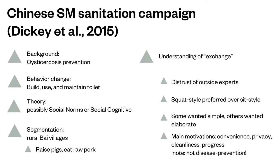They tried to understand the barriers and unique contextual factors in this area. They learned there was distrust of outside experts — so they were already at a disadvantage coming in from the outside. They also found that people preferred a squat-style toilet over a sit-style, with variation in whether they wanted a simple or elaborate design. Interestingly, when asked why they would consider building and using a new toilet, people cited convenience, privacy, cleanliness, and progress — nobody specifically mentioned disease prevention.